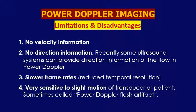The limitations of Power Doppler imaging: first, it provides no velocity information — we cannot tell whether blood flow velocity is high or low. Second, it provides no directional information — we cannot tell if flow is toward or away from the heart. Third, it has a dramatic effect on frame rate, slowing it down significantly compared to other Doppler applications.